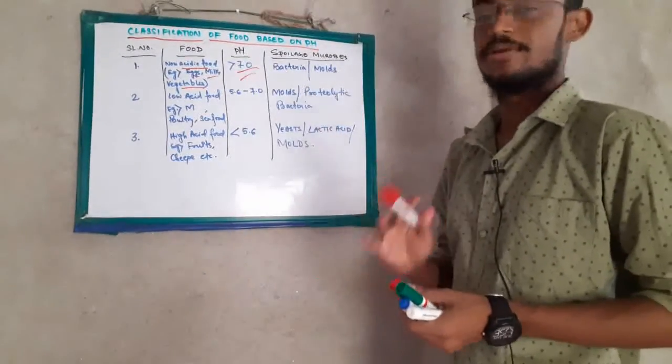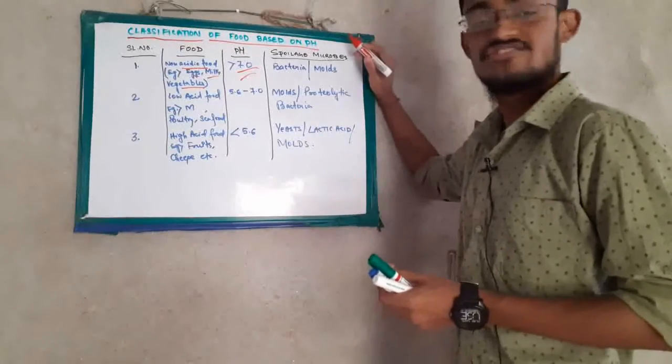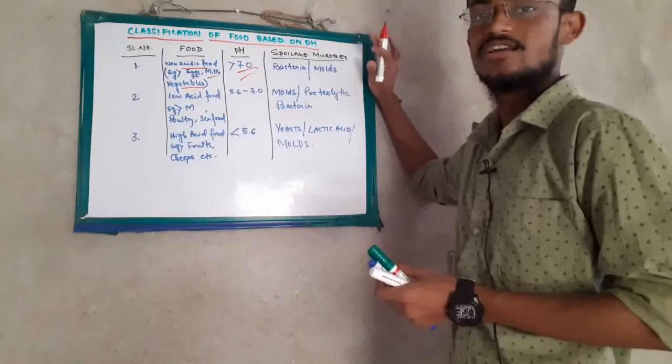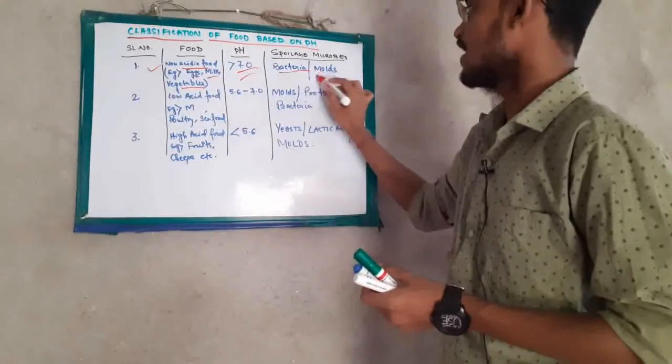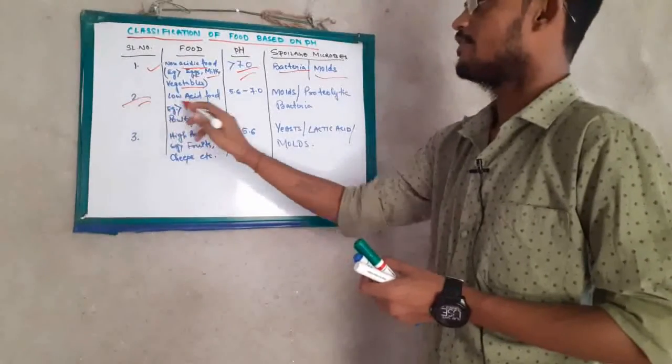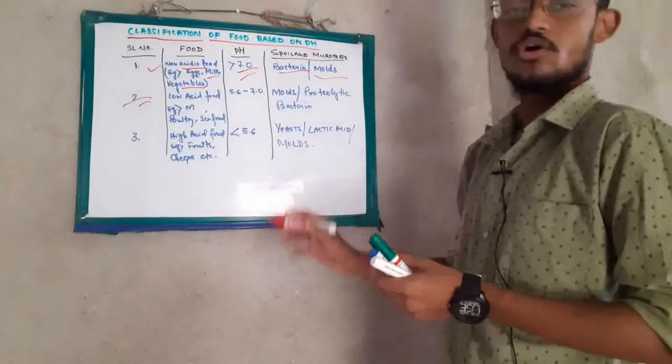The pH is 7.0 or less, and the microbes that spoil this kind of food are bacteria and molds. Second, we have low acid food.